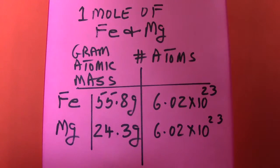And when you look at the atomic mass for iron it is 55.8 grams, and magnesium is 24.3 grams.